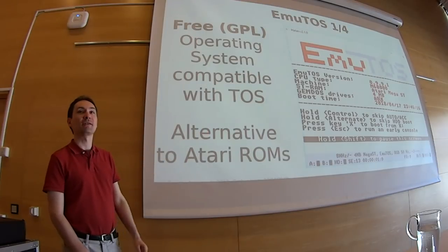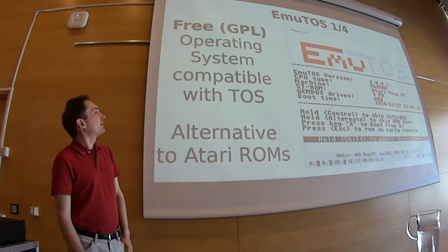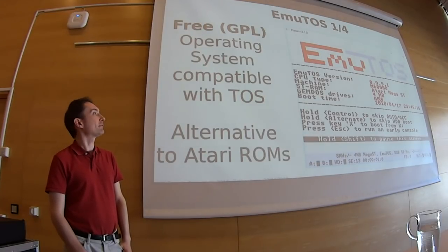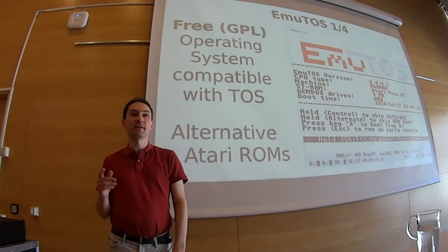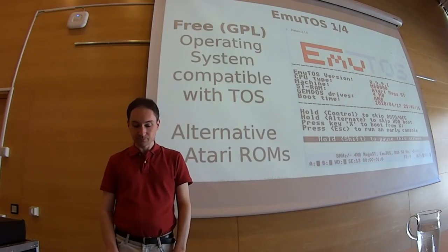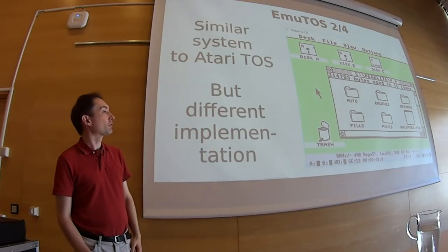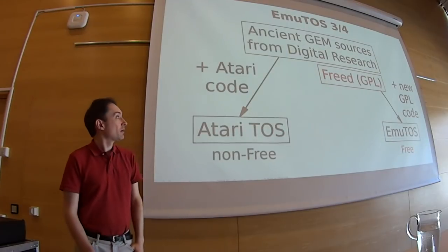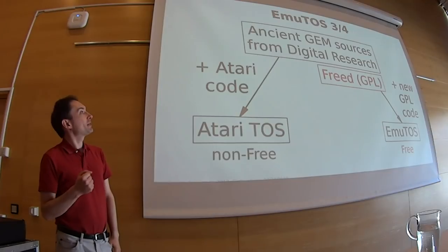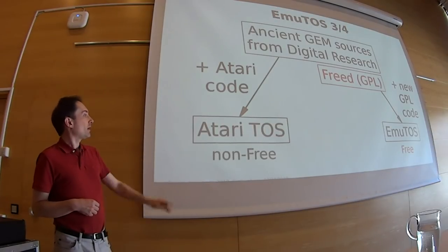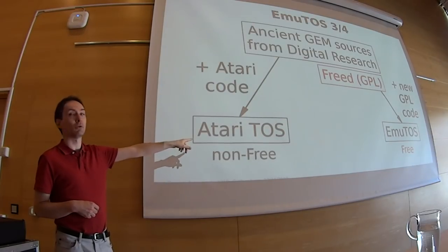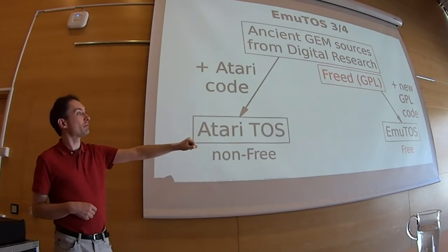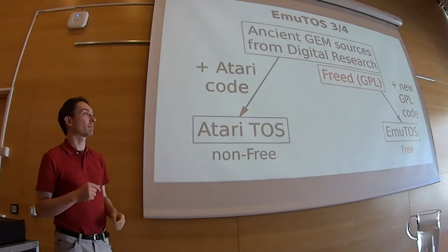Here is EmuTOS. EmuTOS is my favorite software for Atari ST. What is it? It is a free operating system. It has more or less the same functionality as TOS, but it is really free software — so it can be expanded, it can be distributed legally. You can see the EmuTOS desktop; it looks really similar to the Atari one, but the implementation is different. Why is the UI similar? Because it is based on old GEM sources. Atari used those older sources from Digital Research to make their TOS. That old software was eventually freed, then the EmuTOS people took the source, filled the gaps, and it became EmuTOS.